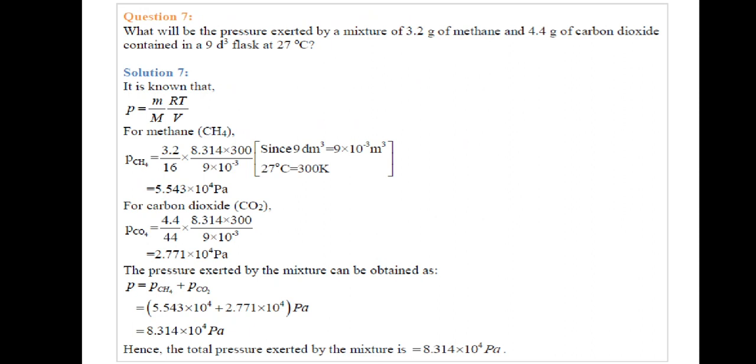Now for carbon dioxide, 4.4 given mass upon molecular mass 44 times 8.314 times 300 upon 9 times 10^-3 equals 2.771 times 10^4 pascal. Total pressure will be pressure exerted by CH4 plus pressure exerted by carbon dioxide, which is 5.543 times 10^4 plus 2.771 times 10^4 pascal, which becomes 8.314 times 10^4 pascal.